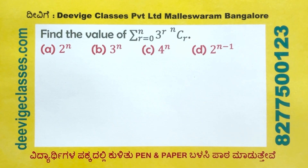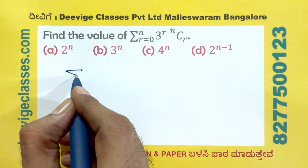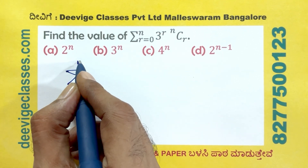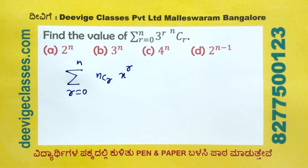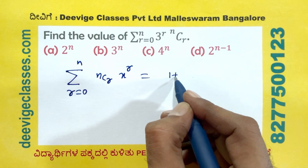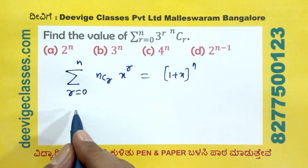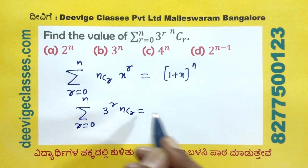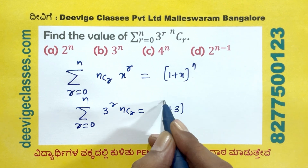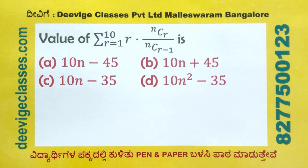Find the value of sigma r equals to 0 to n of 3 power r times nCr. Now, 1 plus x power n expansion: 1 plus x power r, and 2 power r is actually 1 plus x power r.